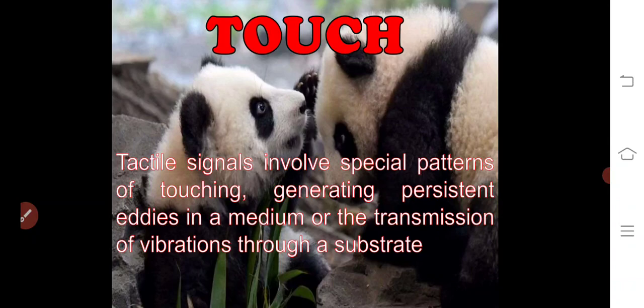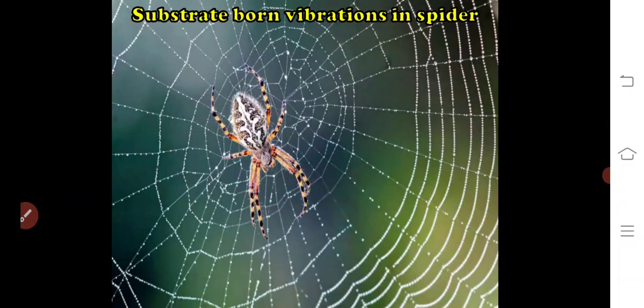Coming to the fourth modality, the touch sense. Tactile signals involve special patterns of touching, generating persistent eddies in a medium, or the transmission of vibrations through a substrate. Touches during aggressive encounters may provide information about the body size and strength of opponents. The tactile signal involves special patterns of touching, generating persistent eddies in a medium, and here we are also seeing substrate born vibrations in the spider.